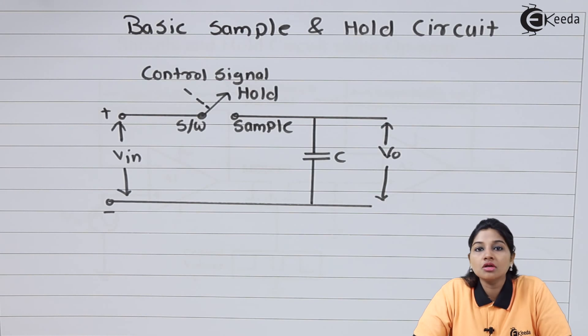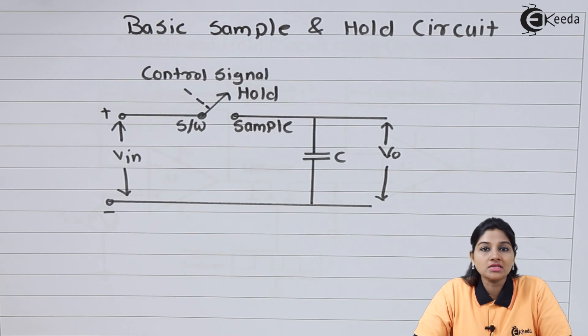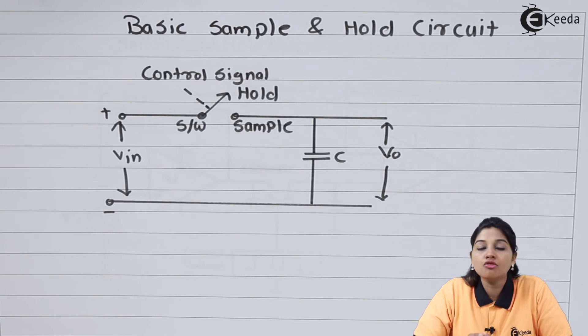In a sample and hold circuit, there are two processes: first, sampling the input signal, and second, holding the sampled value for a specific period of time. For that purpose, we need to consider the basic sample and hold circuit.